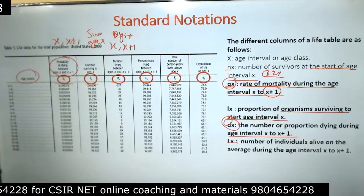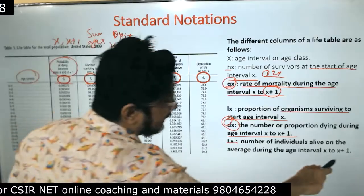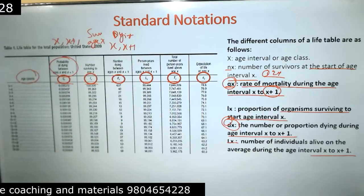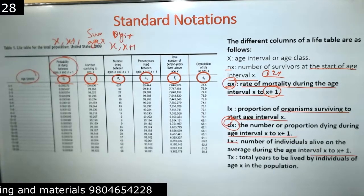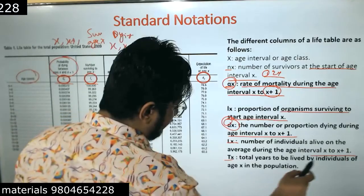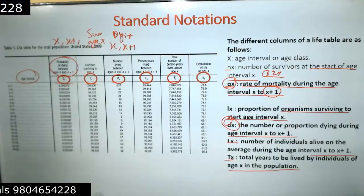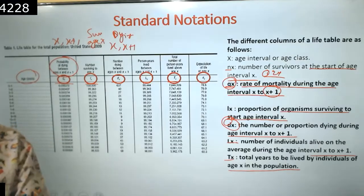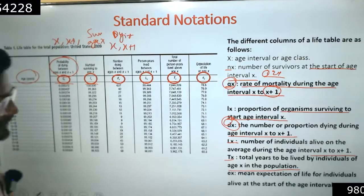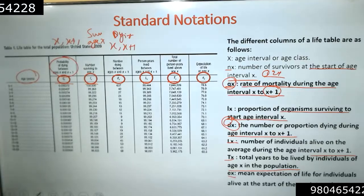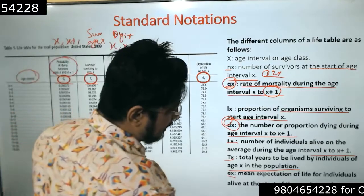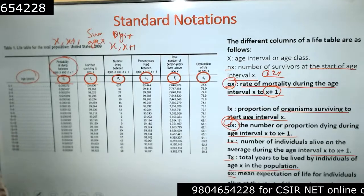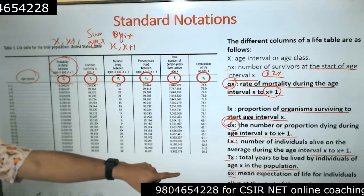Capital Lx is the number of individuals alive on average during the age interval x to x+1 — for example, from age 10 to 11. tx is the total years to be lived by individuals from age x onwards in the population. ex is the mean expectation of life for individuals alive at the start of age interval x — meaning, on average, how long those individuals are expected to live.